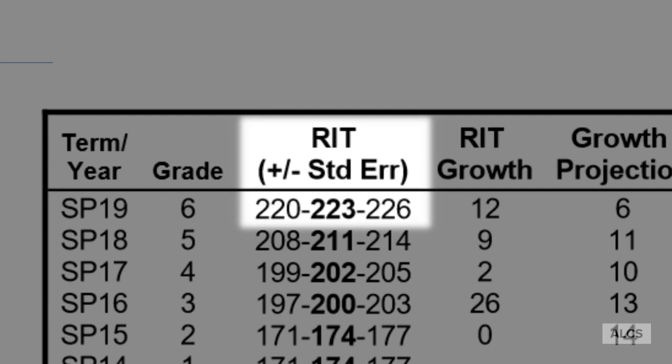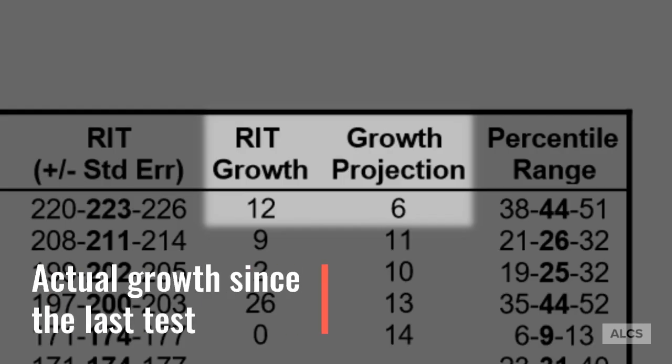On this test, the student's actual score was 223, and if the student were to take the same test again, the score would likely fall somewhere between 220 and 226. The RIC growth column indicates the difference between the student's score on this test and the student's score on the previous test. We can see that this student's score improved 12 points between spring 2018 and spring 2019, from 211 to 223.